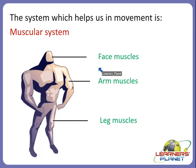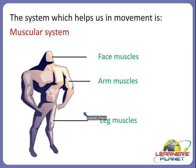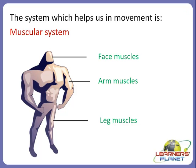Face muscles help us to frown and smile - when we are happy or sad, these face muscles move and help us in movement. Arm muscles help us in making biceps and triceps, and leg muscles help us in working our thigh muscles. All these muscles are present in the muscular system which helps us in movement.